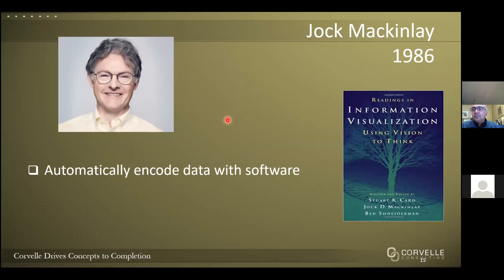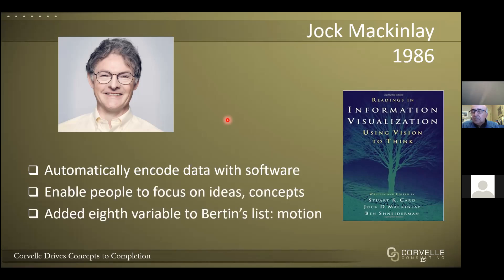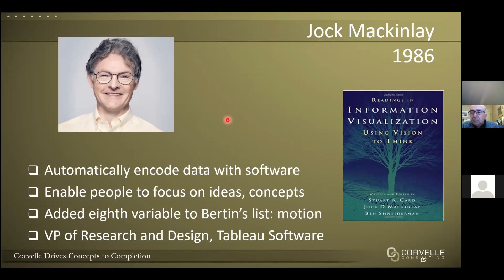Jacques McKinley's contribution was automatically encoding data with software — creating visualizations on the fly at the speed of thought. He carried Bertin's work into the digital age by adding an eighth variable: motion. He was very big on not getting lost in the mechanics of producing data visualizations, and the introduction of the PC and cheaper computing enabled that. He is VP of research and design at Tableau Software, and when you think about the software you typically use, it claims to guide you in following good principles of design.